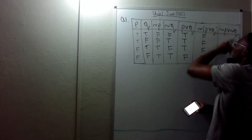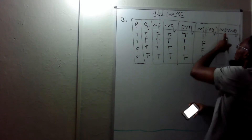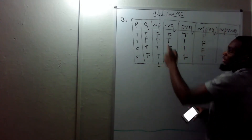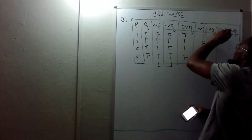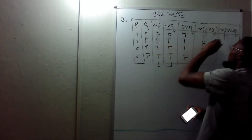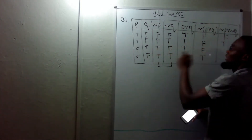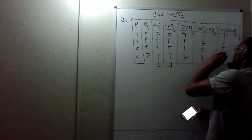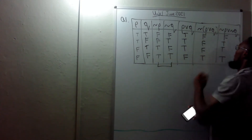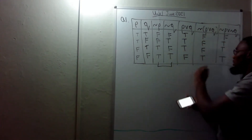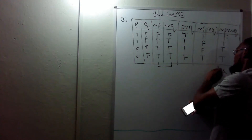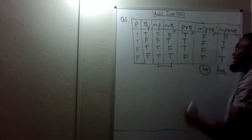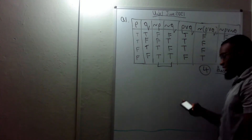For ¬P∨¬Q: false or false is false, false or true is true, true or false is true, true or true is true. So that's the truth table right there — that's four marks.